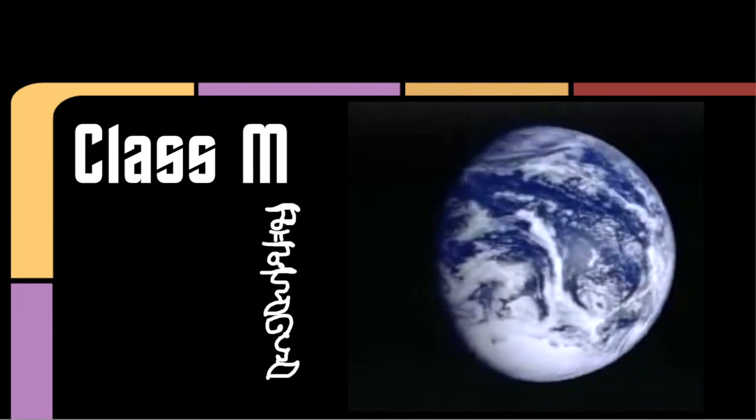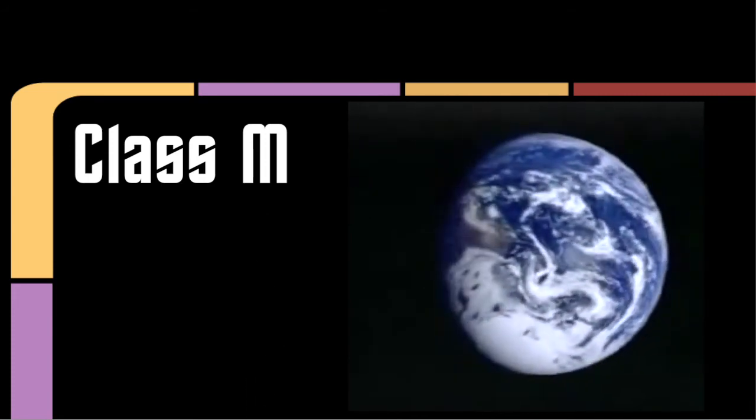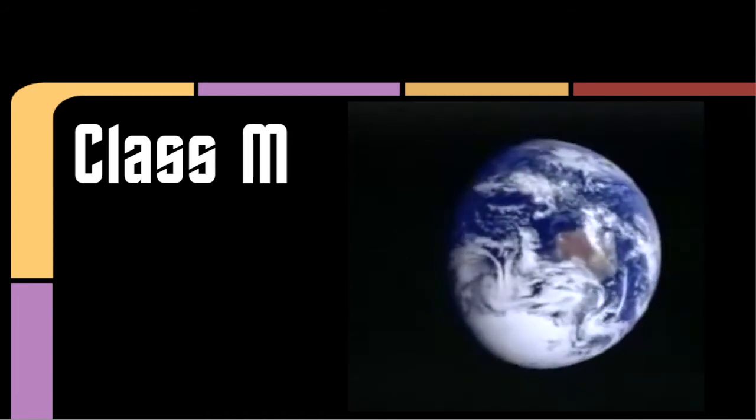Class M, coming from the Vulcan word Minshara, and thus known as the Minshara class worlds, are like Earth, Vulcan, Organia, Romulus, Kronos, Bajor, or other planets that support complex humanoid or even intelligent lifeforms for long periods of time. Some of which probably evolved on that planet.